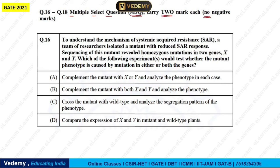Let's look at the question. To understand the mechanism of systemic acquired resistance (SAR), a team of researchers isolated a mutant with a reduced SAR response. Sequencing of this mutant revealed a homozygous mutation in two genes — called X and Y — and due to these mutations the mutant showed a greatly reduced SAR response.